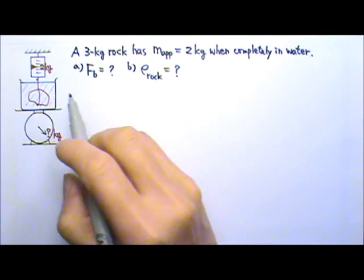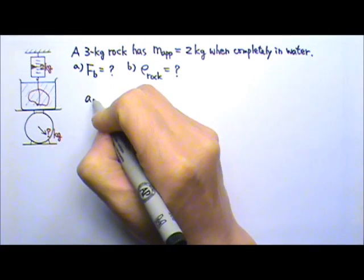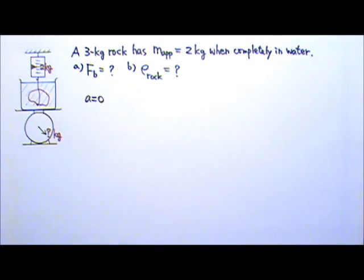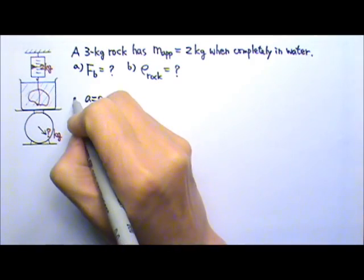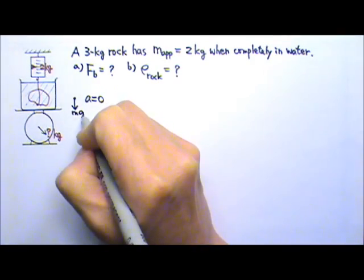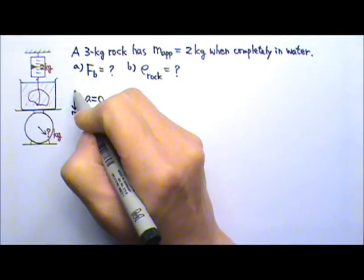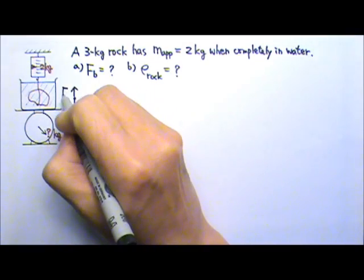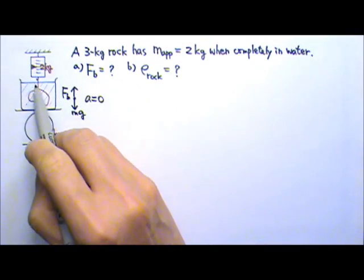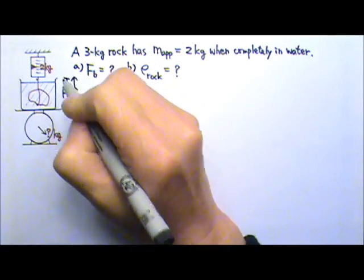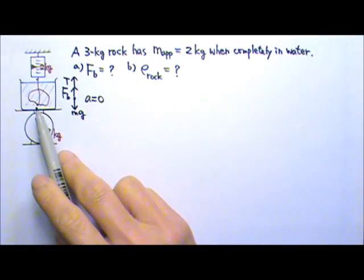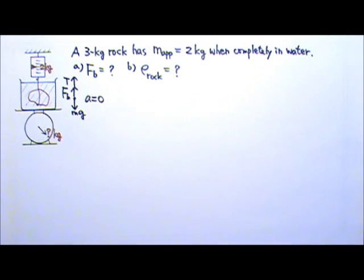The rock is at rest and staying at rest, so the acceleration of the rock is zero. If we draw the force diagram of the rock, we have the mg of the rock and the buoyant force from the water. The rock is also touching the string, so there is the tension going up. The rock is not touching anything else, so we are done with the force diagram.